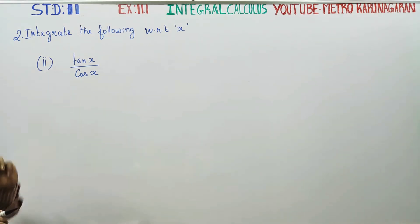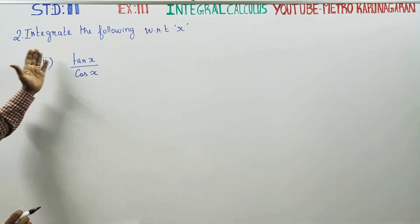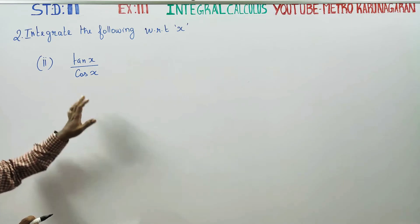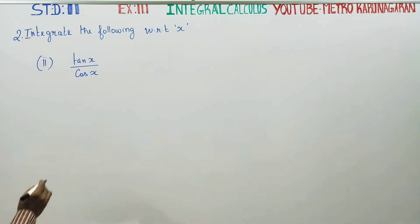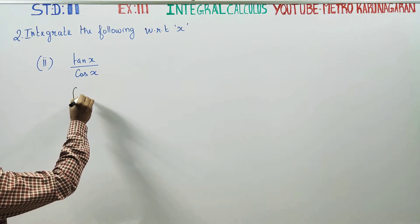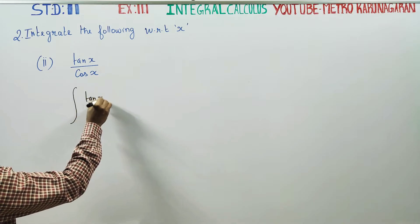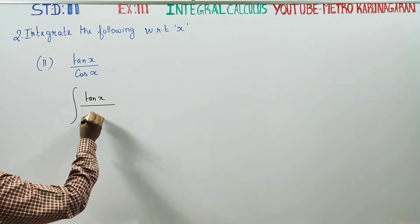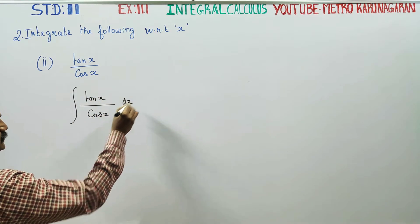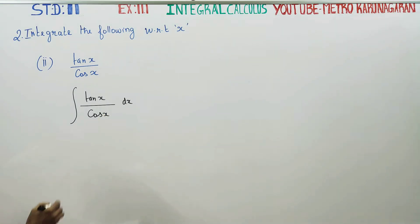Dear 11th standard students, in problem number 2, integrate with respect to x: tan(x) by cos(x). First I am going to put the integration symbol — integral of tan(x) by cos(x) dx with respect to x.